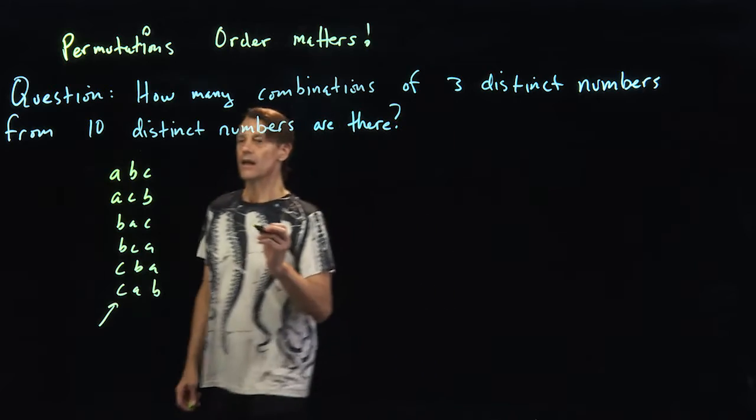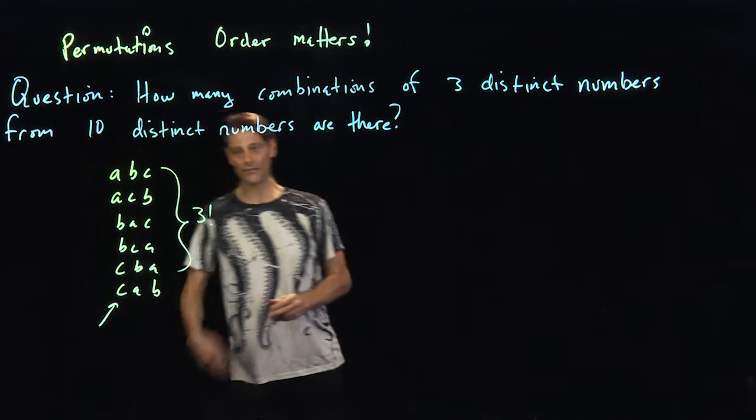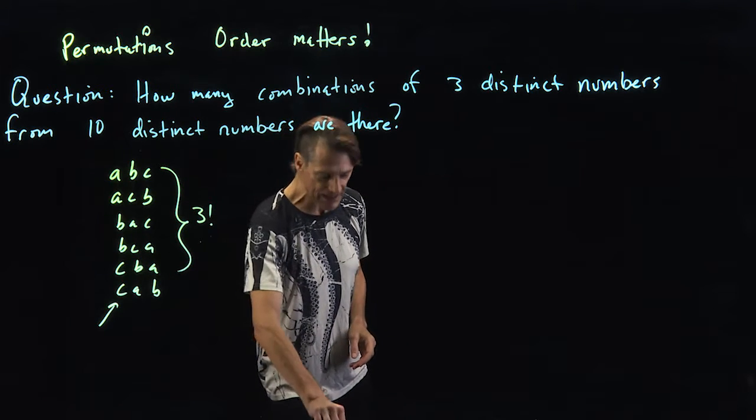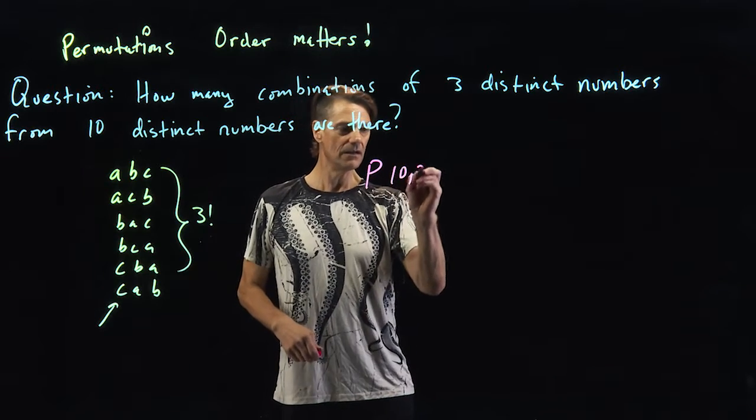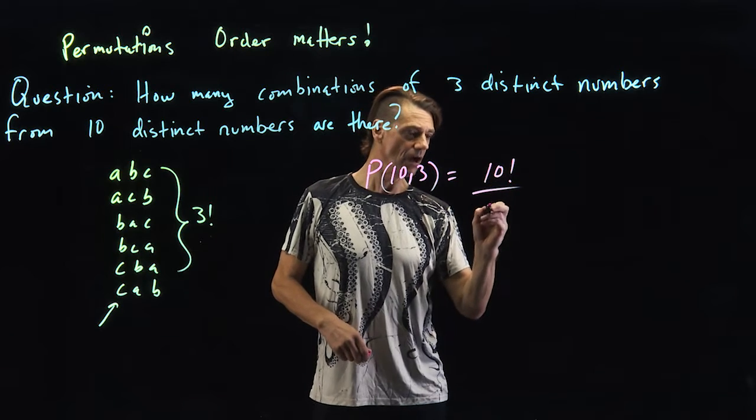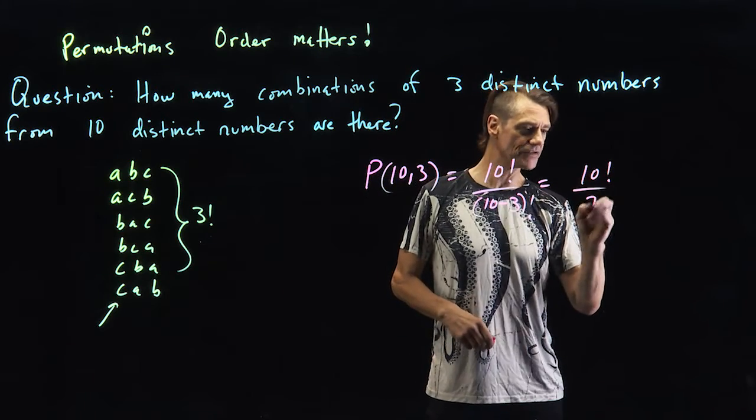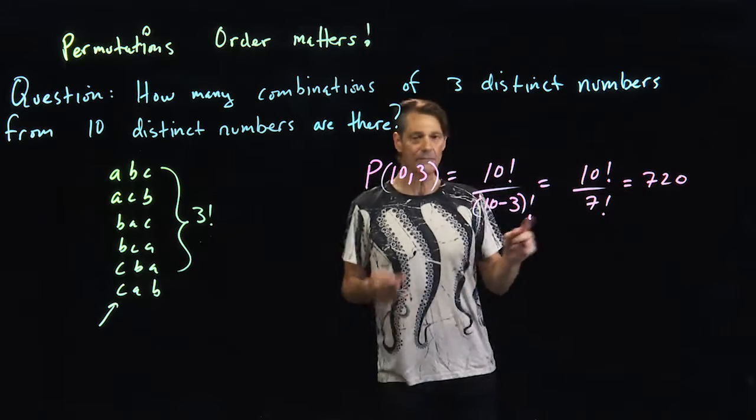So there are three factorial orderings of these number of objects, right? So now we saw if we're taking a permutation, P(10,3), this is 10 factorial over 10 minus 3 factorial. This is 10 factorial over 7 factorial. This ended up being 720. But think about it.